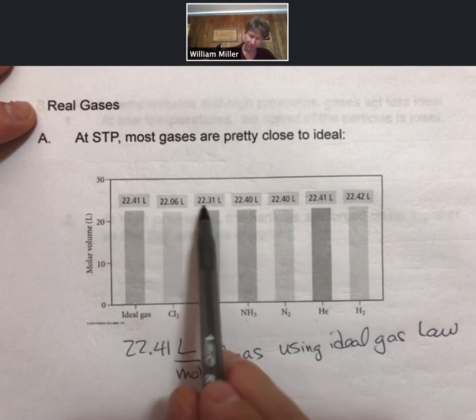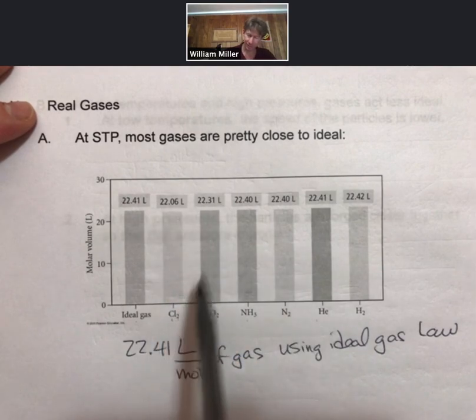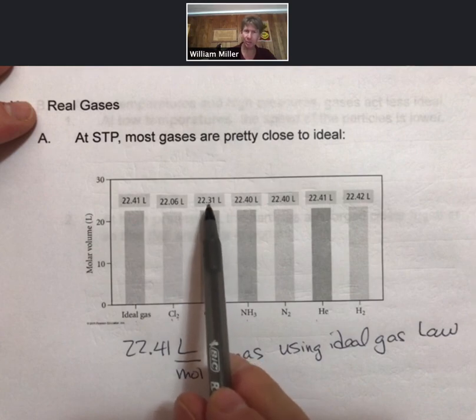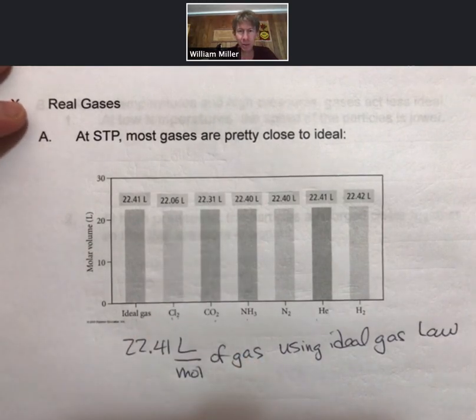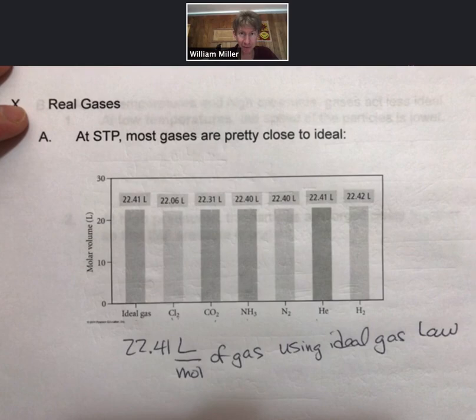Some of them get a little farther away, like chlorine and carbon dioxide, but they're all pretty close. For this course they're close enough. That's why we use the ideal gas law.